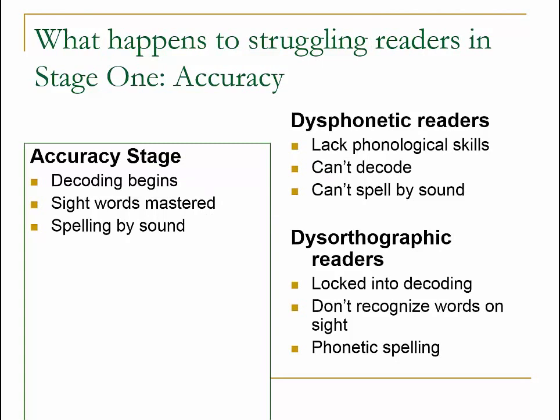So what happens to struggling readers in Stage 1? Stage 1 is the accuracy stage where kids begin to decode. They learn sight words. They are spelling according to how words sound — 'was' is very often spelled W-E-Z, 'said' is often spelled S-E-D. This is usually late kindergarten to beginning first grade. What's happening with dysphonetic readers is, because they lack those underlying phonological awareness skills, they can't decode and they can't spell by sound well.